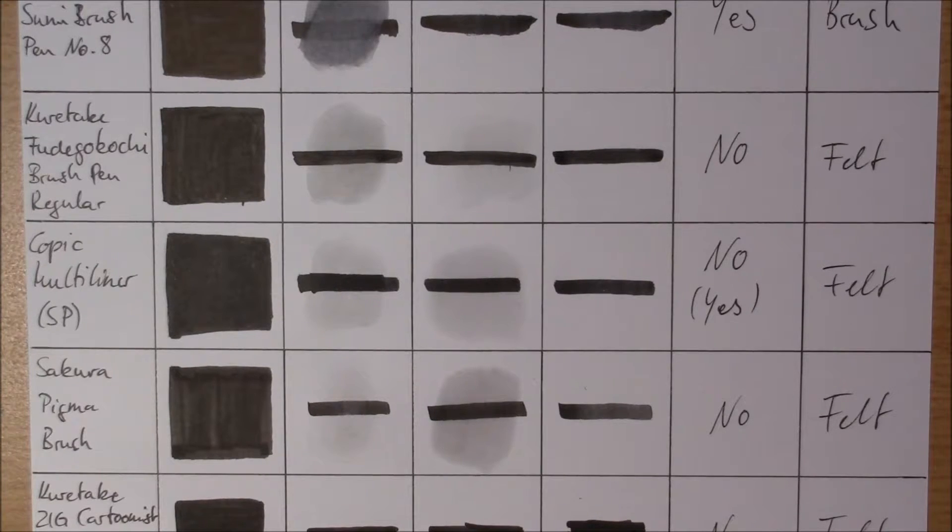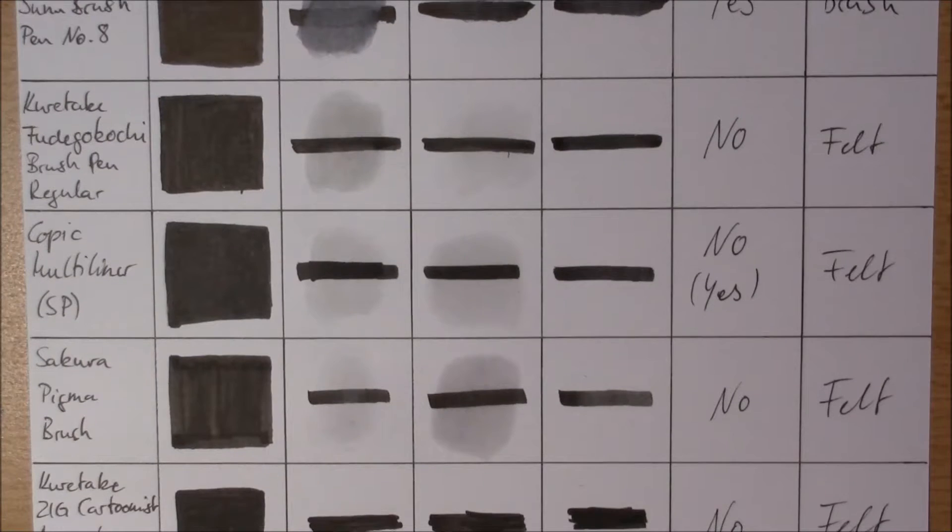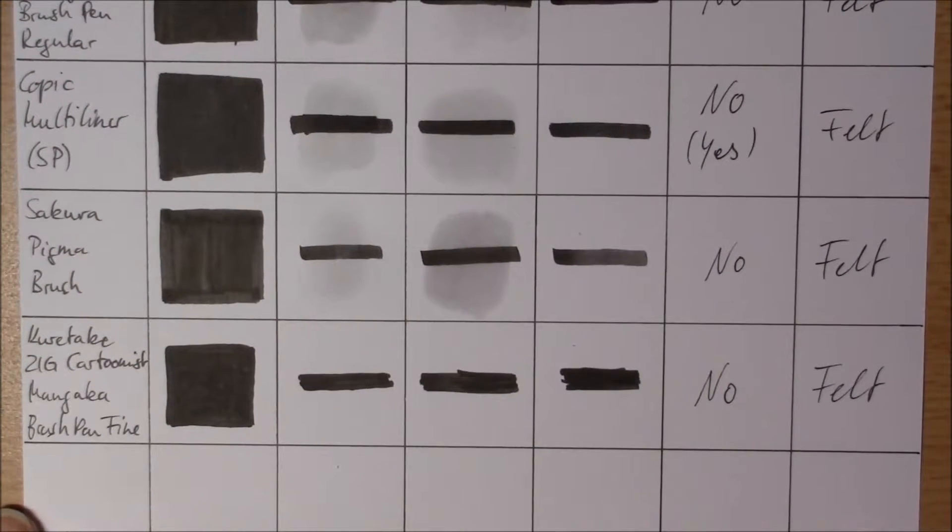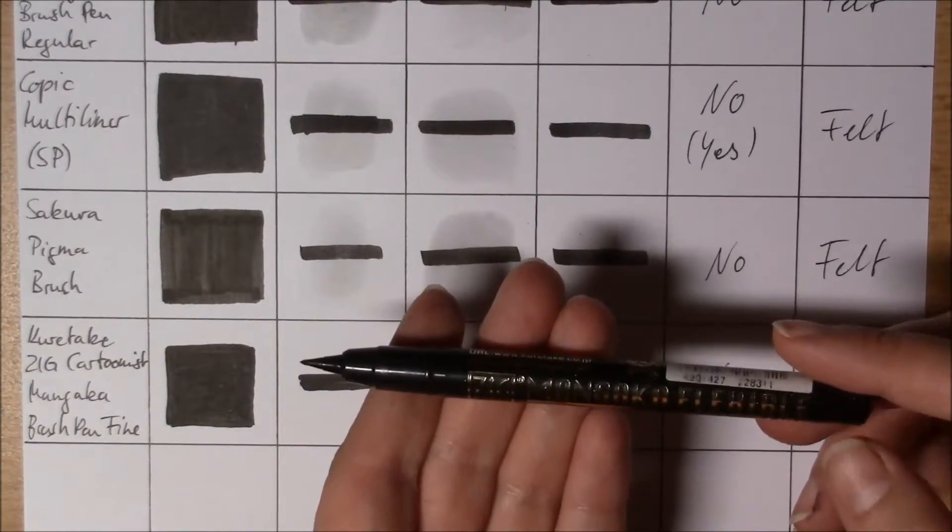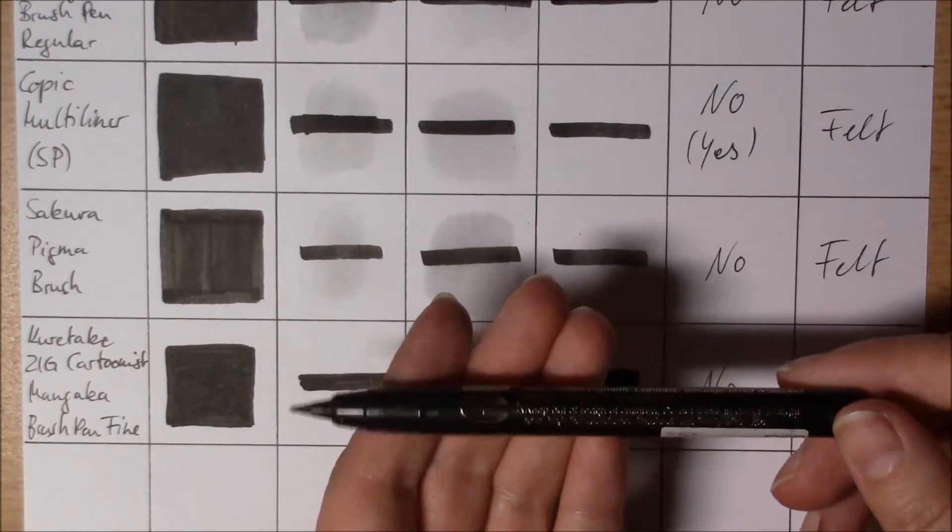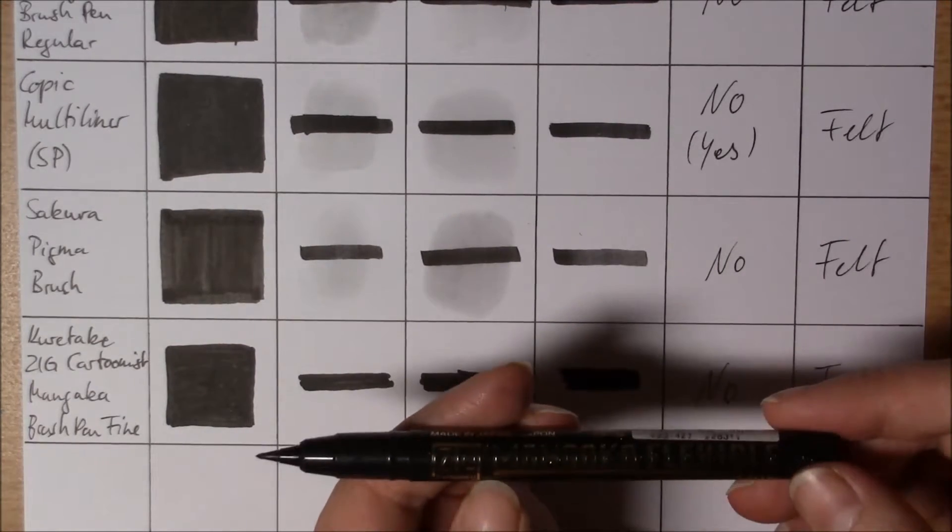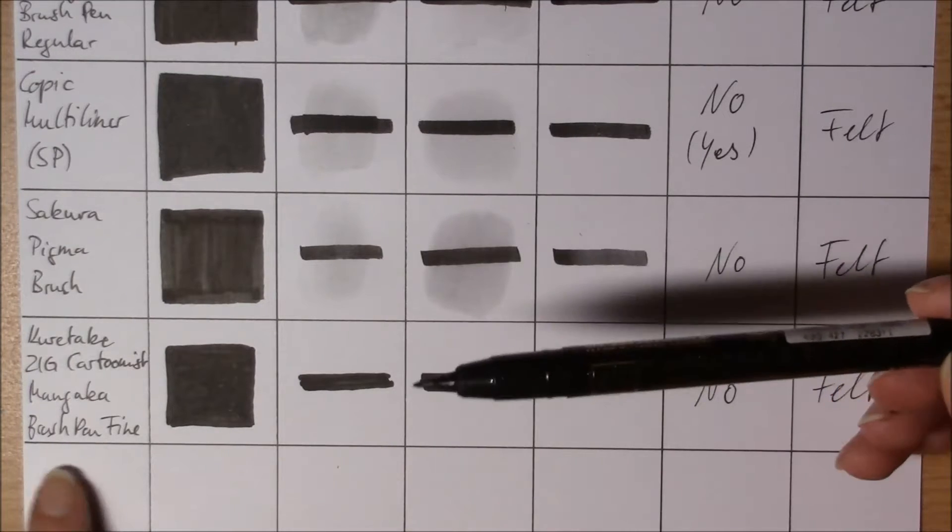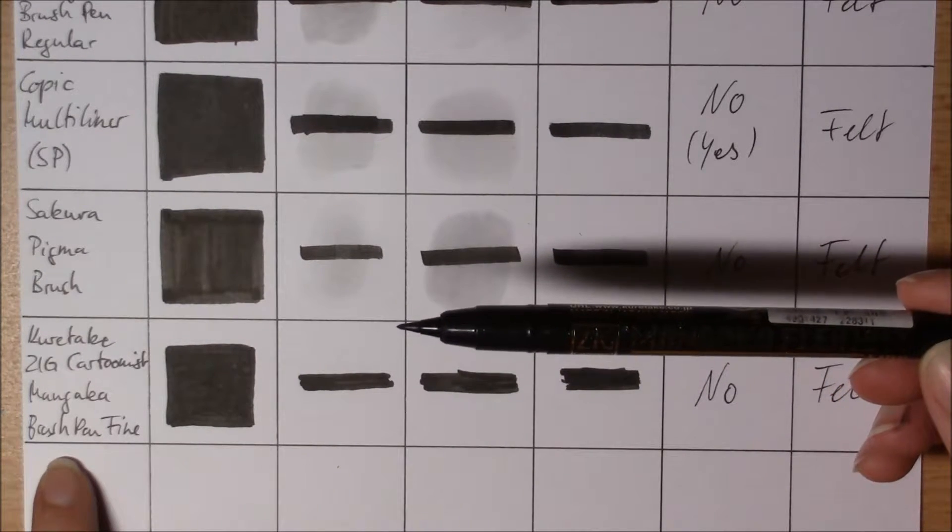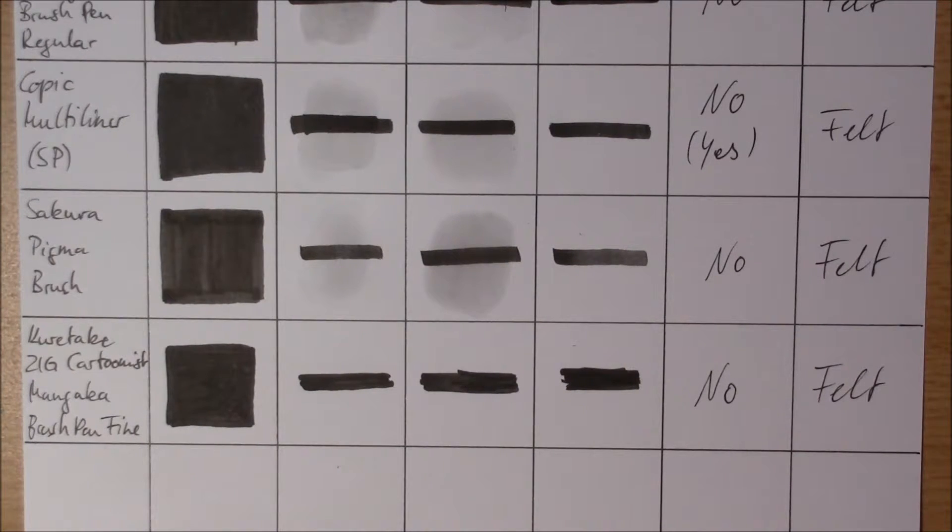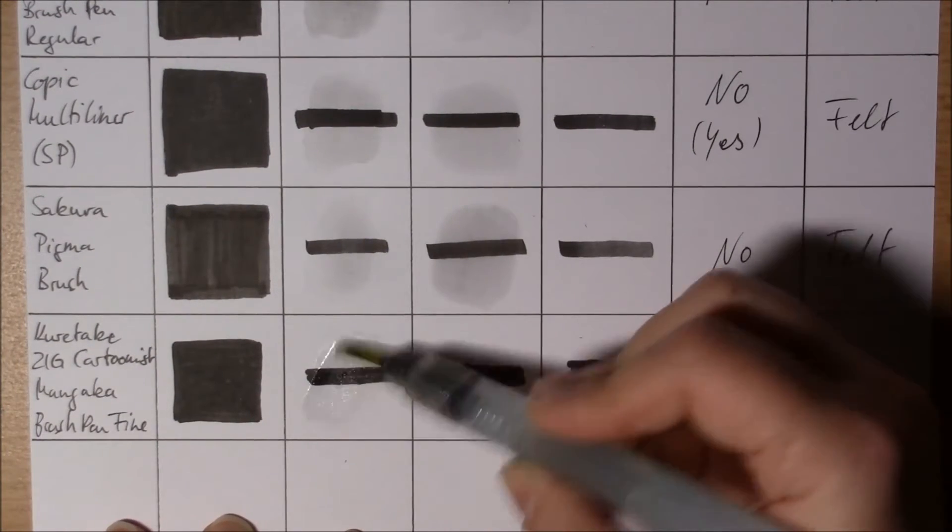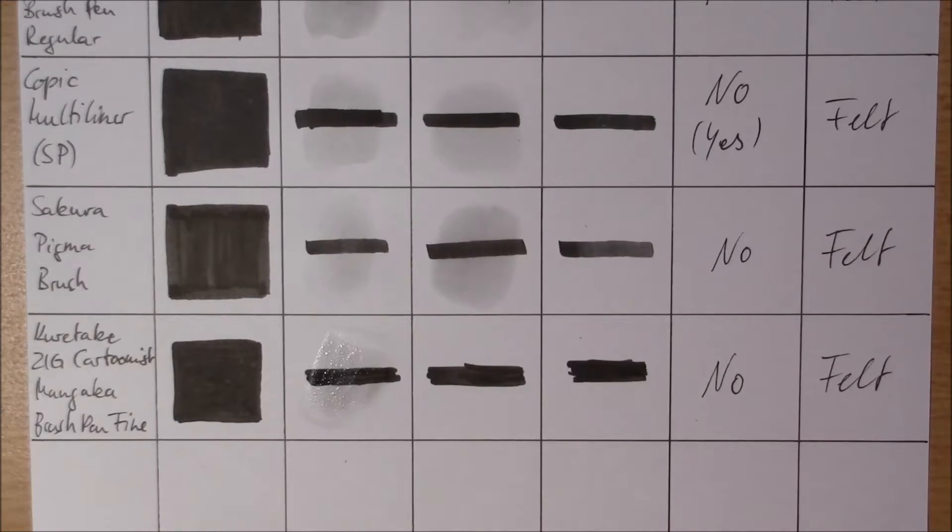Now the only thing left is the Kuretake SIG Cartoonist Mangaka Brush Pen in fine, with a long name. Okay. That's the one they used on the website I bought it, I think. Also no refills and a felt tip.